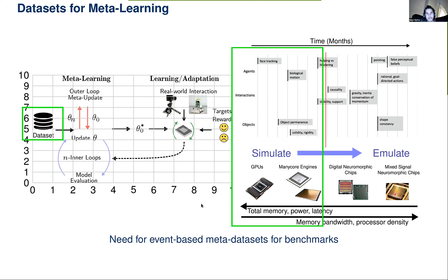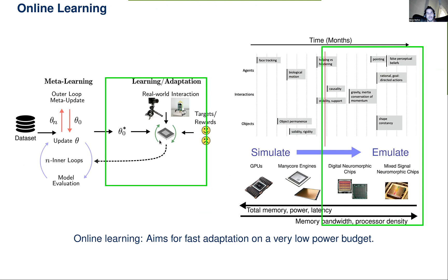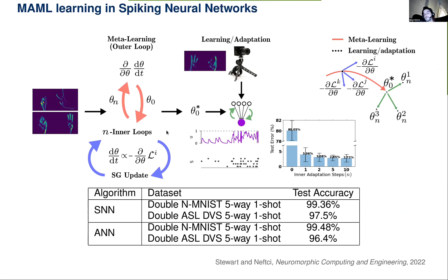We also have to think about datasets. In meta-learning you need to learn across several datasets. Conventional meta-learning uses Omniglot and Mini-ImageNet. Since we're in the spiking world, we'd like to use event-based datasets, so we have our own variations of event-based MNISTs for building multiple tasks needed for meta-learning, and there's also a neuromorphic version of Omniglot from another group. We've implemented model-agnostic meta-learning for spiking neural networks, and it works as expected — reaching similar results compared to conventional neural networks.